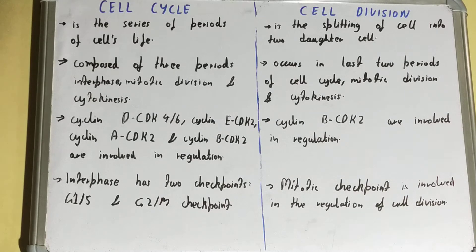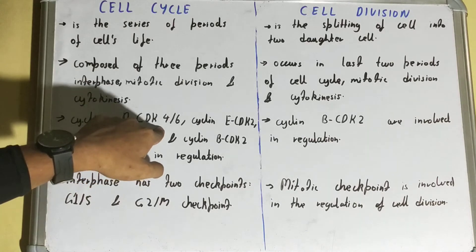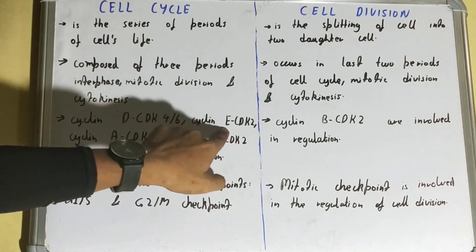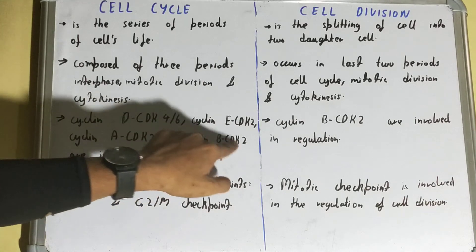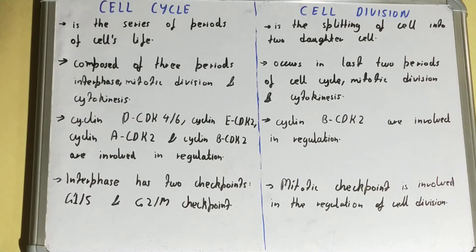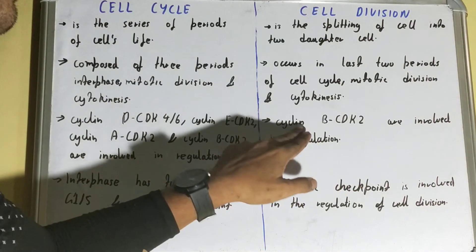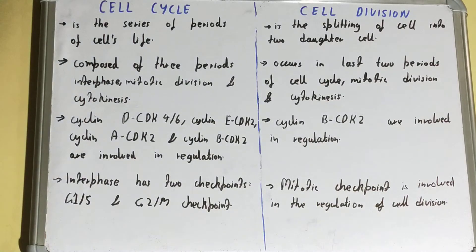Next, the cell cycle includes four cyclins: cyclin D/CDK4-6, cyclin E/CDK2, cyclin A/CDK2, and cyclin B/CDK2, which are involved in the regulation of the cell cycle. But if we talk about cell division, then cyclin B/CDK2 is involved in the regulation.